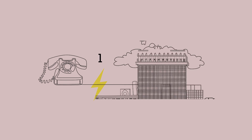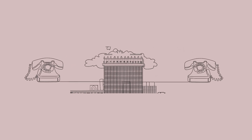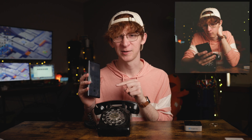Old rotary phones dial using electrical pulses that, at the time, would get sent to a telephone exchange. The number of pulses sent corresponded to the digit that was dialed — so dialing one would send one pulse, dialing two would send two pulses, and so on. From there, the phone exchange would route the call to the desired destination.